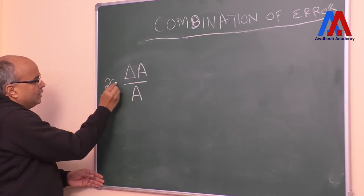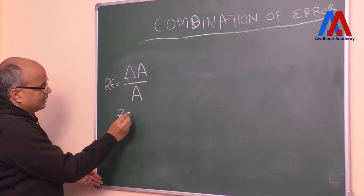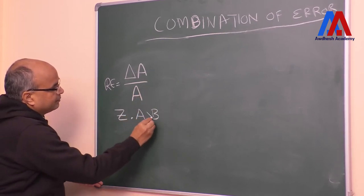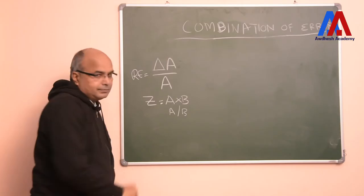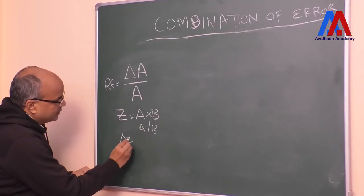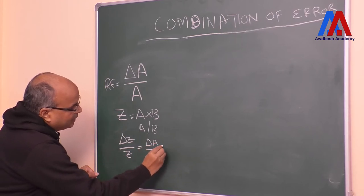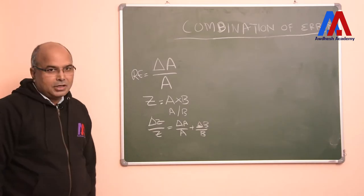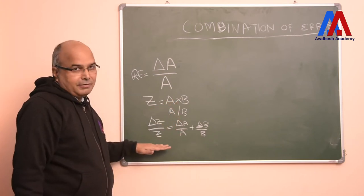Now we have to measure the error — the error is a dimension 'a'. The other dimension is 'b', or a divided by b. In both cases, the error is the relative error. Delta z by z is equal to delta a by a plus delta b by b. So you have seen that when we multiply or divide, in both cases the error is the relative error.